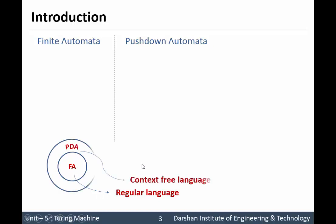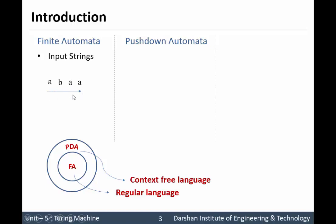The language accepted by finite automata is called regular language, while the language accepted by pushdown automata is called context-free language. The limitation of FA can be overcome by PDA because PDA is more powerful than FA. In FA, the data structure we had is only the input string, and we have one control that can move only in the forward direction, so we can scan our input string from left to right only.